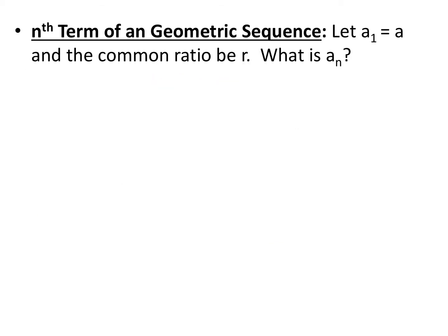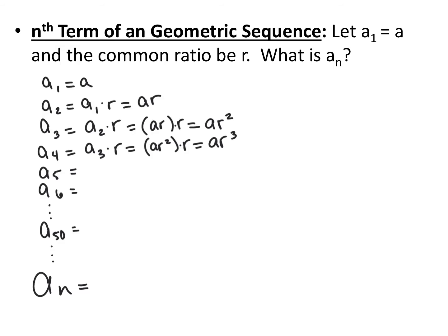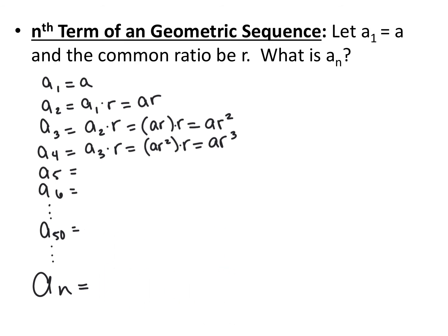Just like we talked about the nth term of an arithmetic sequence, we can use the recursive formula to develop the nth term of a geometric sequence. We let the first term be a and the common ratio be r, and we want to find a_n. Setting up the expansion: the first term is a, the second term is a·r, the third term is ar·r = ar², and the fourth term is ar²·r = ar³. Continue the pattern for a₅ and a₆, then find a₅₀ and a general nth term.